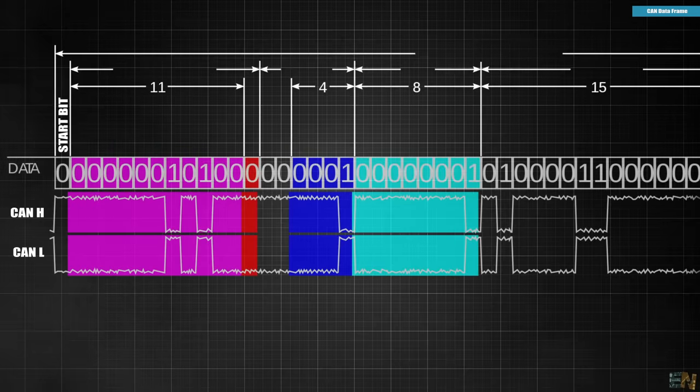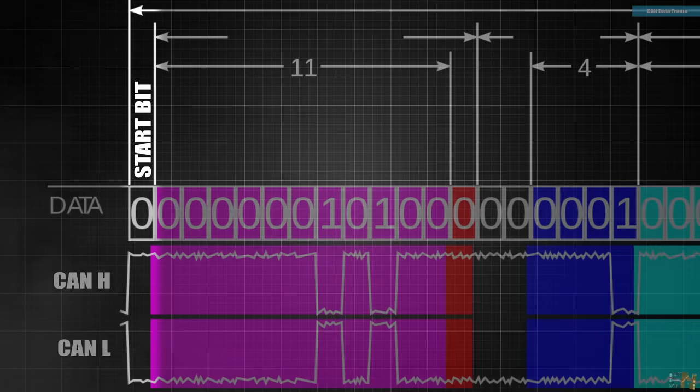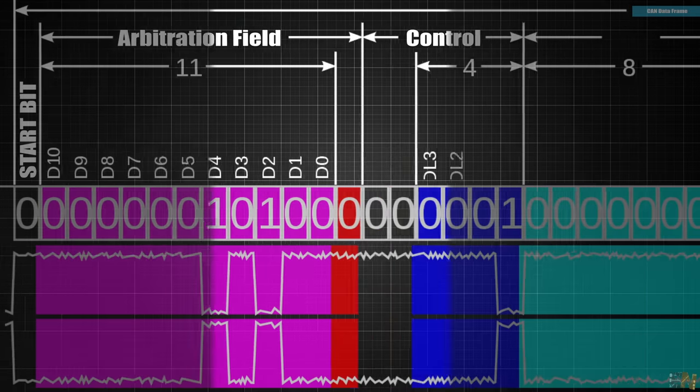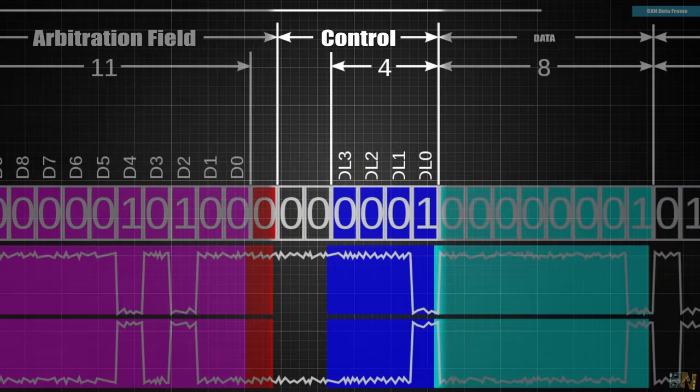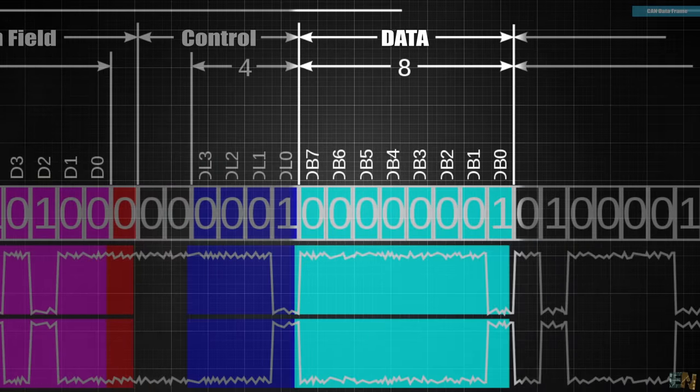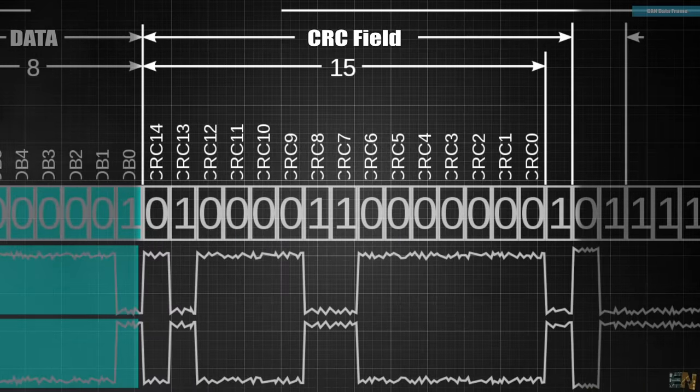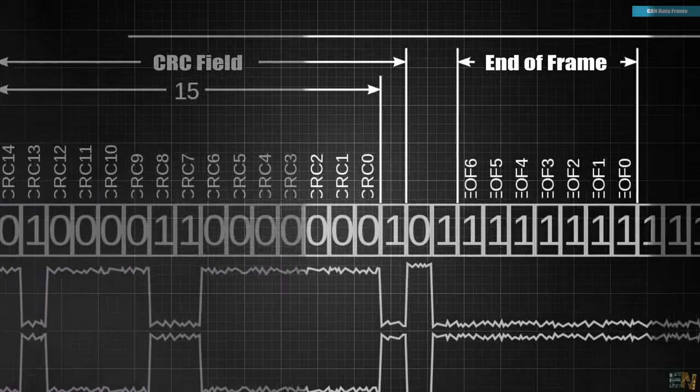For the data frame, the signal starts with a start bit, so in that way the rest of the devices will be aware that new data is coming in. Then we have the ID bits, so we know to which device the data is sent. Then we have the control bit and the actual data, which could be from 0 to 8 bytes of data. Then we have the CRC bits which we will talk about in a moment and finally the end frame bits.